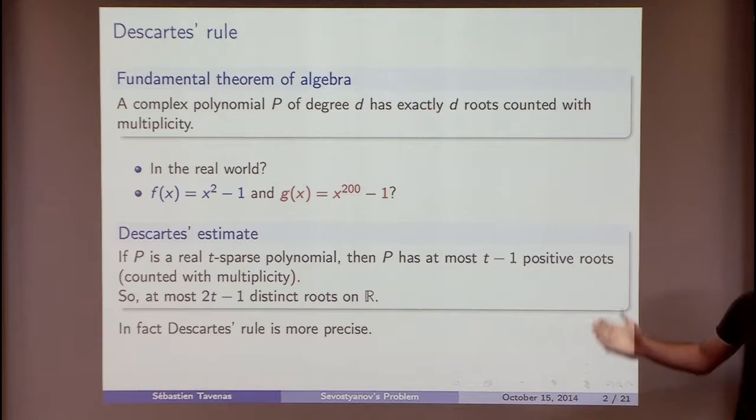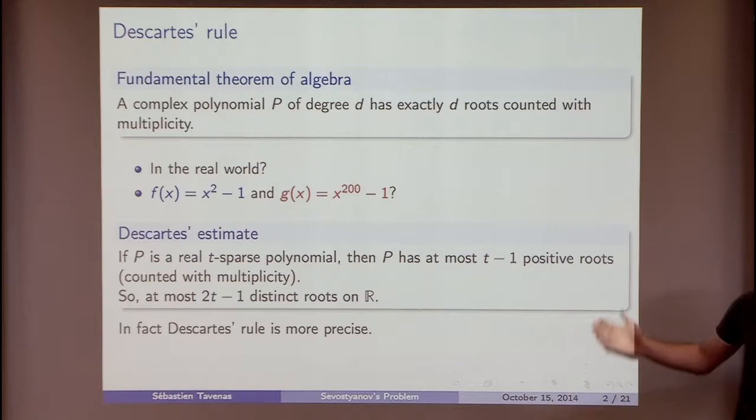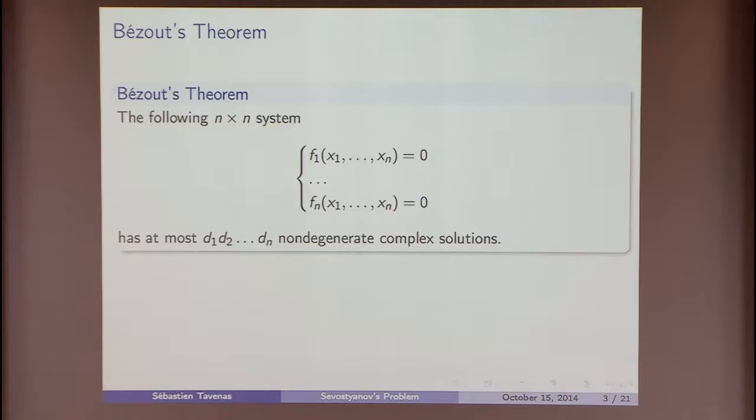There is a result called the Descartes estimate, which says that if we have a polynomial with only t monomials, then the number of real positive roots will be at most t minus 1. And if we want to count all real roots, it will be at most 2t minus 1. This result is generally known as Descartes' rule of signs, though Descartes' rule of signs is more precise.